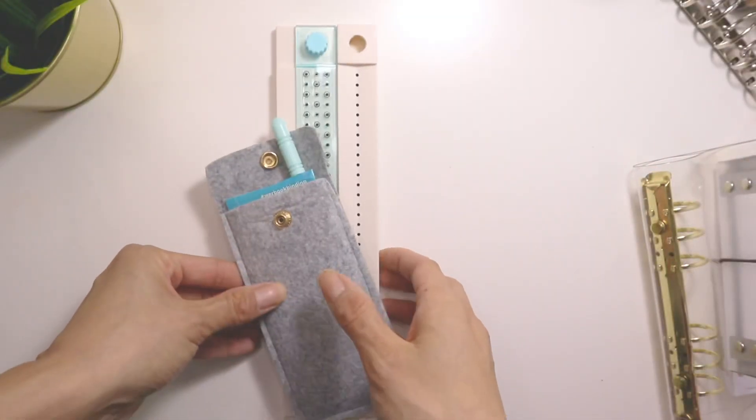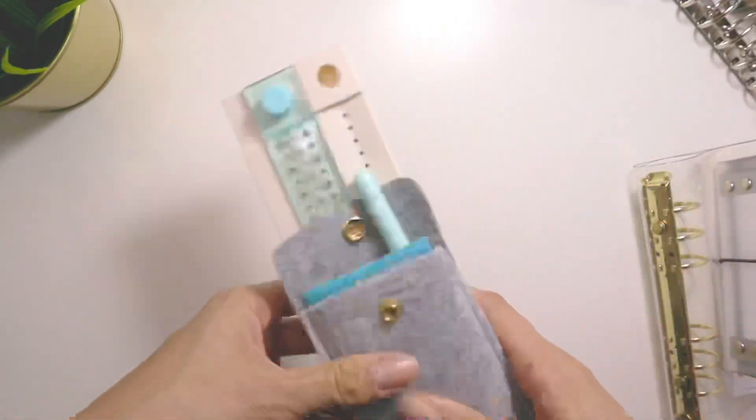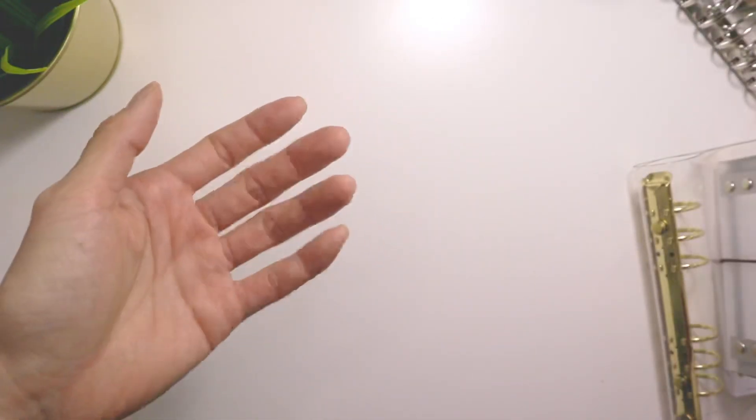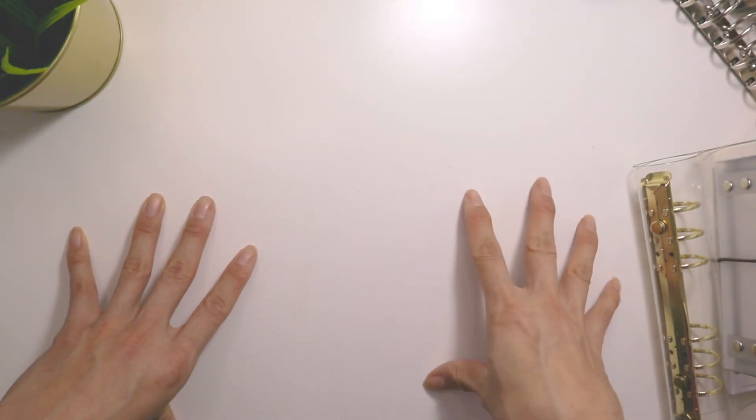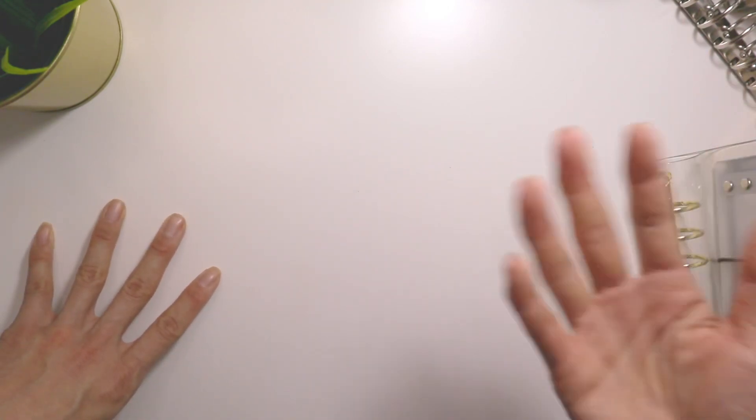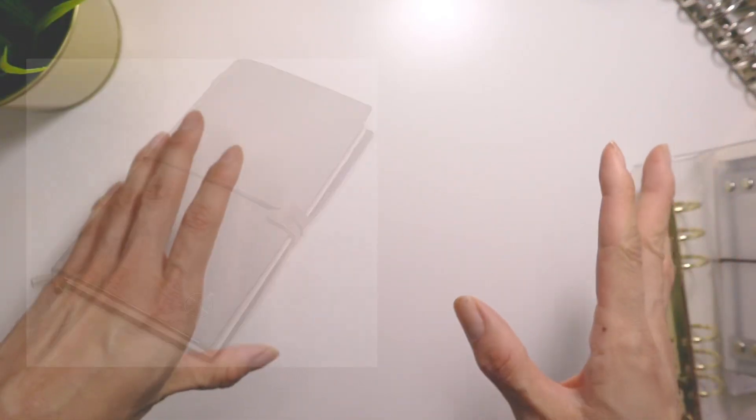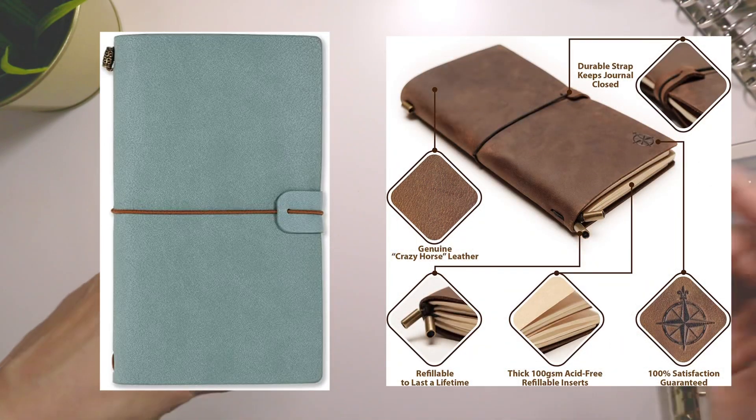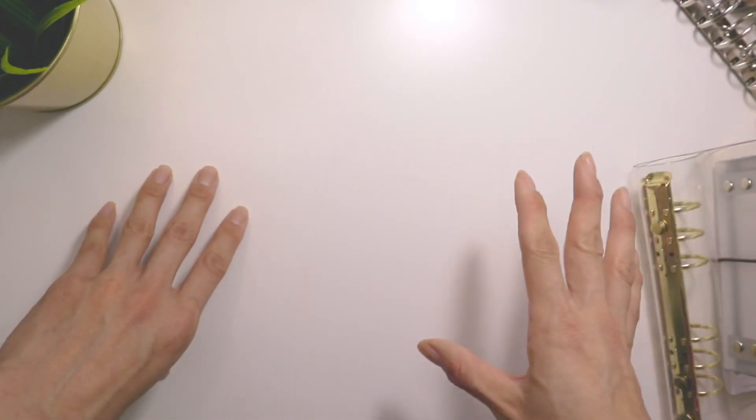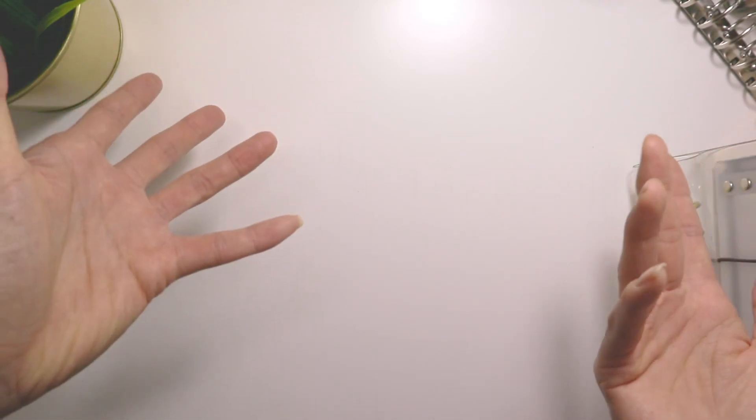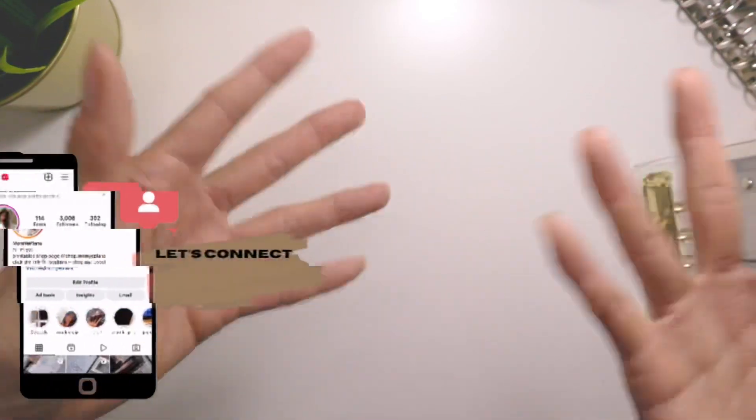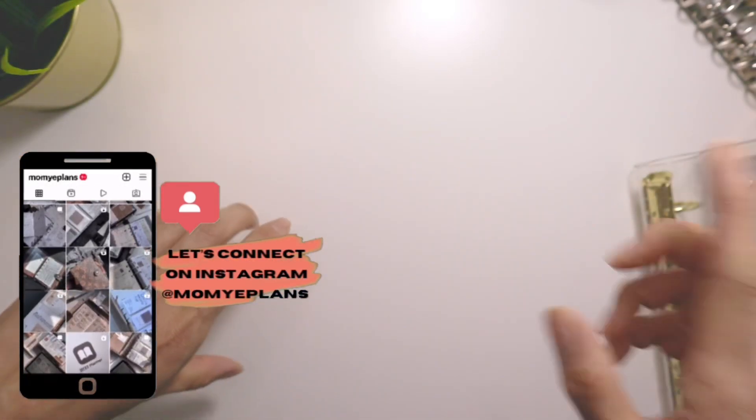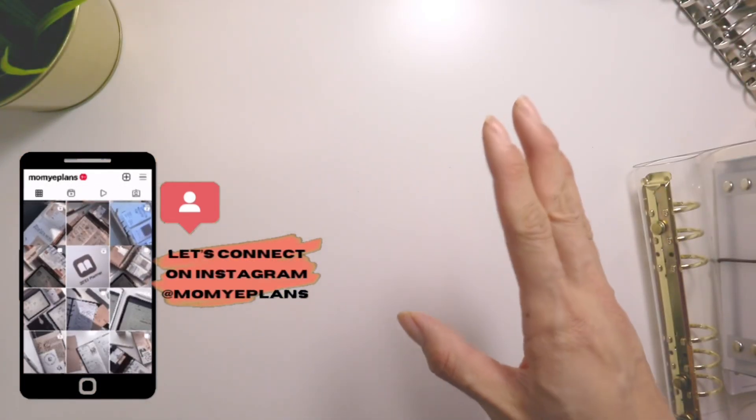And then of course, the last one is again, similar to kind of the clear rings is just to get a really inexpensive TN planner cover and store all your planners in there. So I know obviously the Traveler's Company ones are a lot more expensive, but Amazon and AliExpress have different Traveler's Notebook covers that are I think like $10, $15 I've seen. I'll link them down below that you can use as options for storing your covers because they're not very expensive or storing your inserts. I mean, because they're not very expensive anyways. Okay. So those were the ideas that I have for TNs.